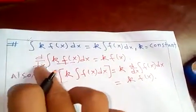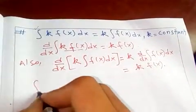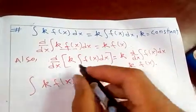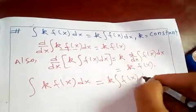Canceling the differentiation, we get that the integral of k*f(x)dx equals k times the integral of f(x)dx.